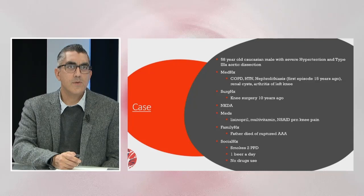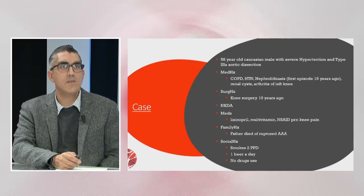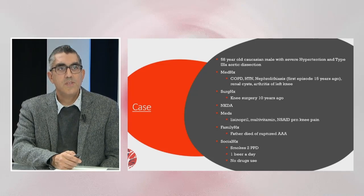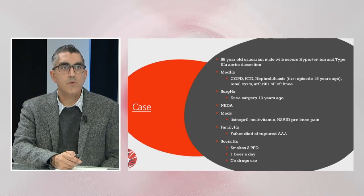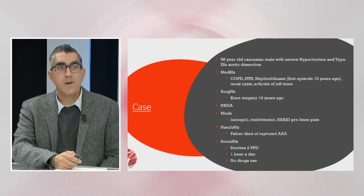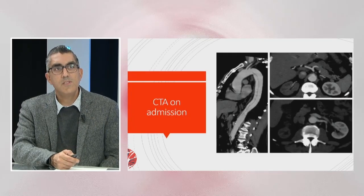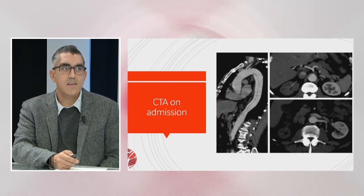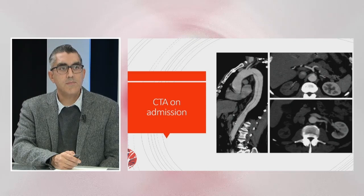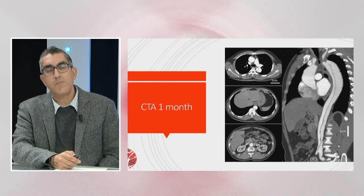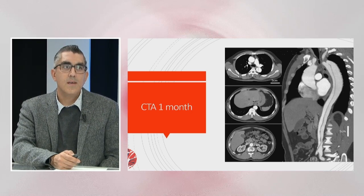This is a 58-year-old Caucasian male who presented with accelerated hypertension and was ultimately diagnosed with a type 3a aortic dissection. His medical history includes COPD and hypertension, with no significant surgical history. He smokes, and his father died of a ruptured aortic aneurysm. This is a type 3 aortic dissection starting at the subclavian, extending down to the celiac. His CTA on admission showed this, and he was medically managed. A follow-up scan at three weeks unfortunately demonstrated propagation from 3a to 3b.